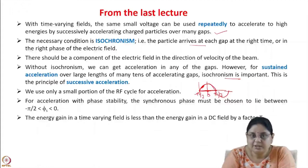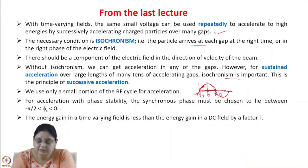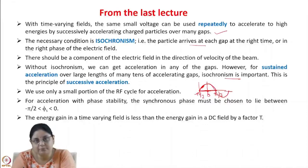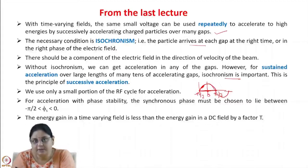The transit time factor T is a dimensionless quantity. It comes into picture because the charged particles take a finite time to transit over the gap, and during that time the field in the gap is varying with time. That is why T is always less than 1, and the energy gain in an RF field is always less than the energy gain in a DC field.